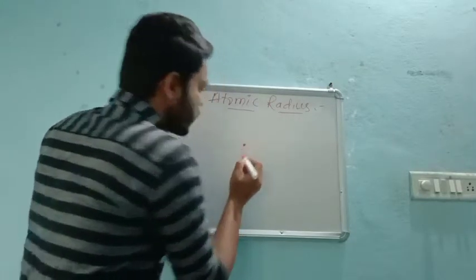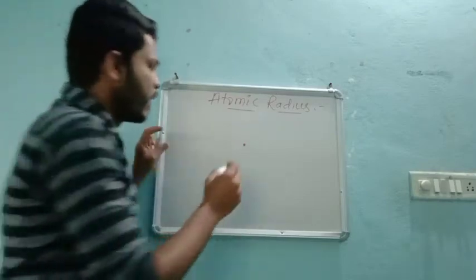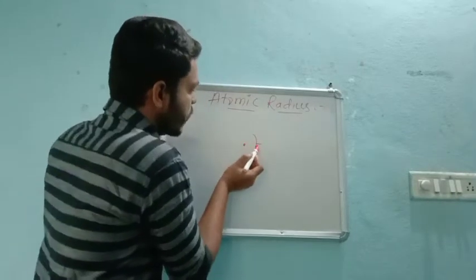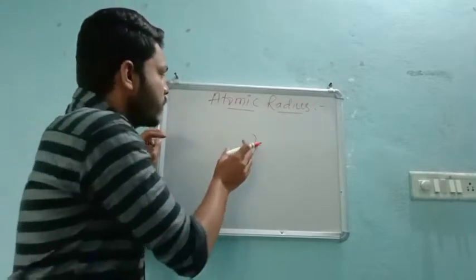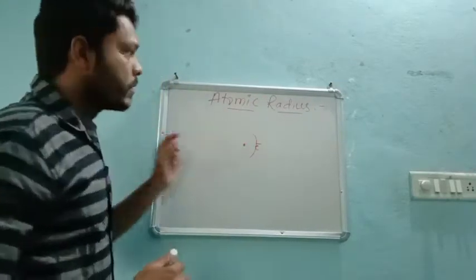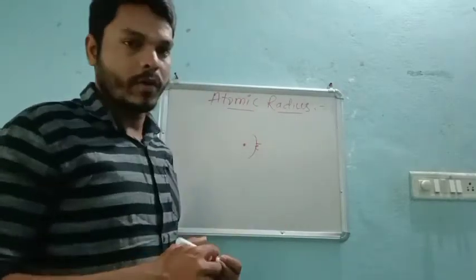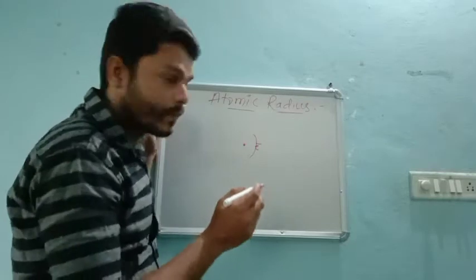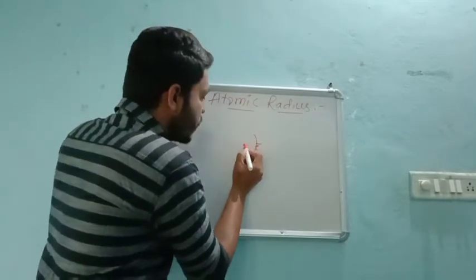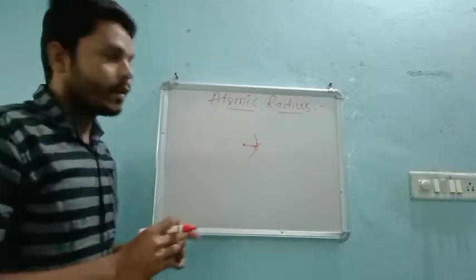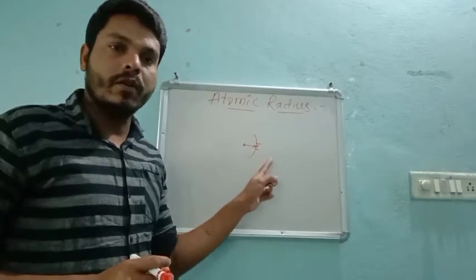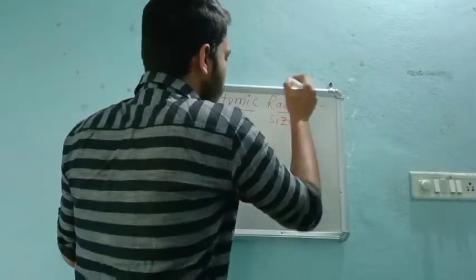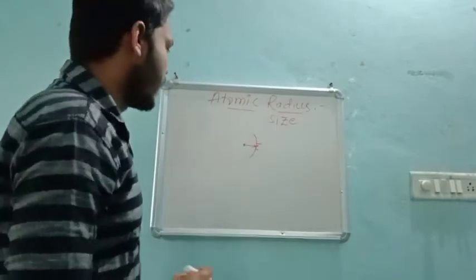If there is an atom, there should always be a nucleus, and to that nucleus the electrons will always revolve. So this is the general view of atomic radius. What is atomic size? How to define atomic radius? Simply, the distance between the center of the nucleus to the outermost shell is called atomic radius, or we can also call this atomic size.